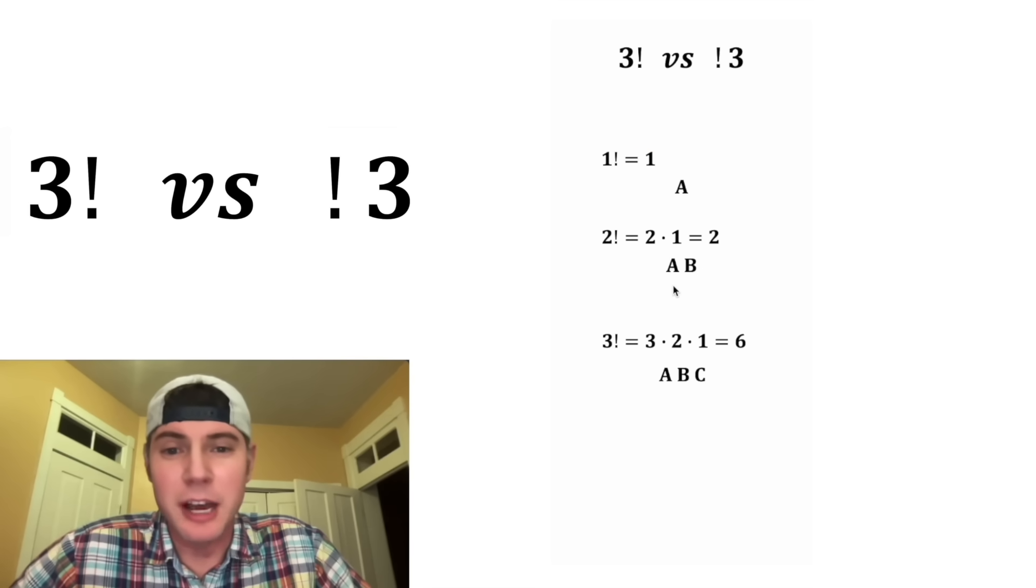And for 2 factorial, how many ways can we arrange AB? Well, we can also do BA. So that means there are 2 of them, so that's why this is equal to 2.